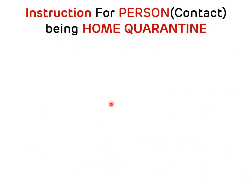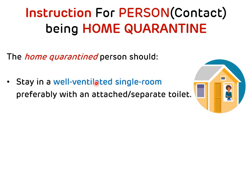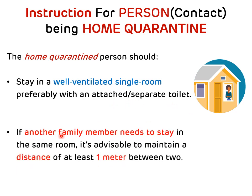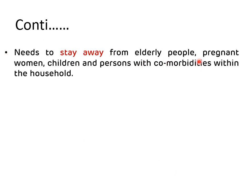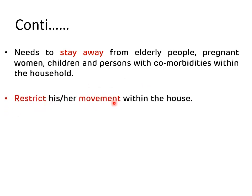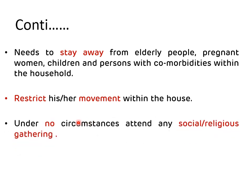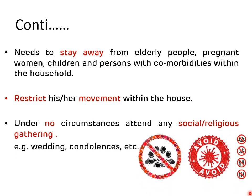Instructions for a person being home quarantined: Stay in a well-ventilated single room, preferably with an attached or separate toilet. If any other family member needs to stay in the same room, maintain a distance of at least one meter between the two persons. Stay away from elderly people, pregnant women, children, and persons with comorbidities within the household. Frequent movement within the house should be avoided. Under no circumstances should you attend any social or religious gatherings like marriages or condolences.